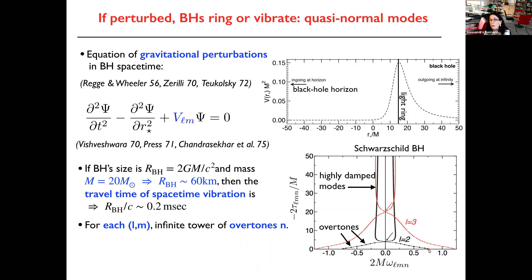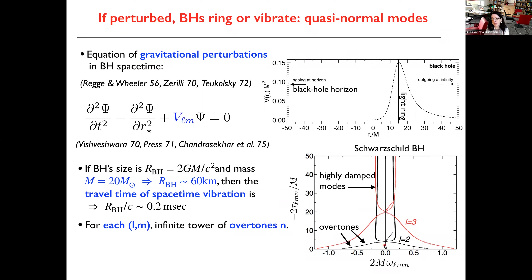For L equal two, you move along this curve depending on the overtone. As you increase the overtone number, at some point the decay time becomes very large — it's very difficult to excite overtones with N larger than zero. So the dominant mode is L equal 2, N equal zero, which has the shorter value of tau and dominates the waveform. Higher overtones can be excited during merger but they decay very quickly, so it's difficult to observe them. The red curve is the case L equal three.